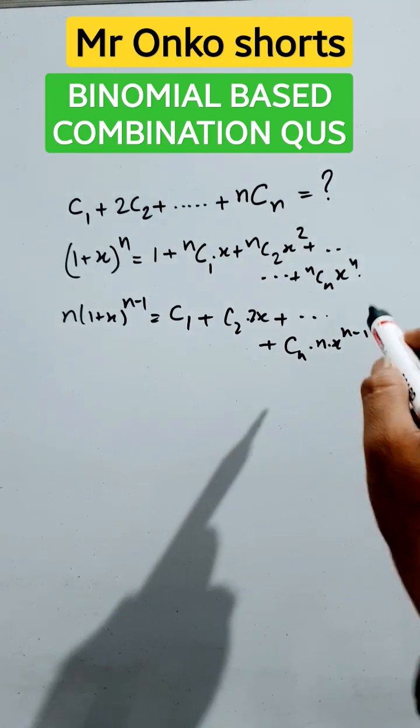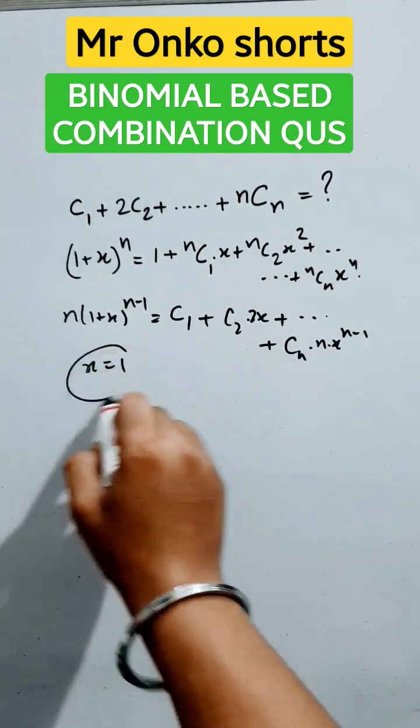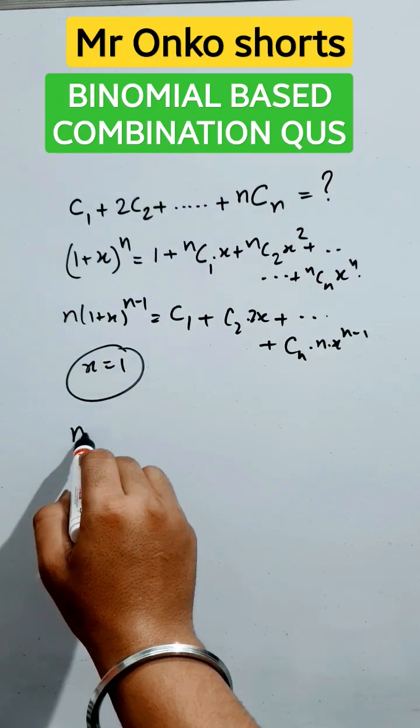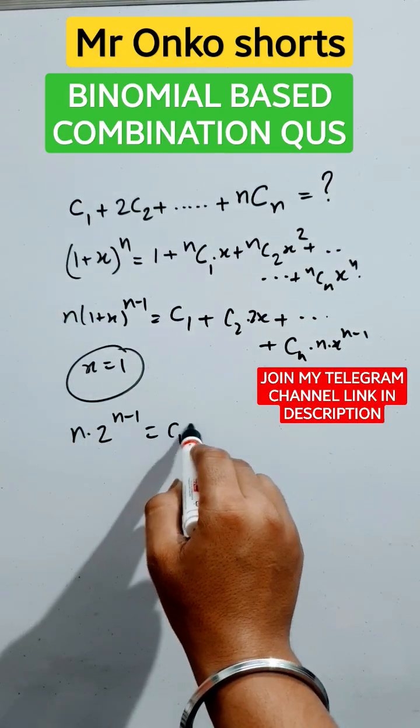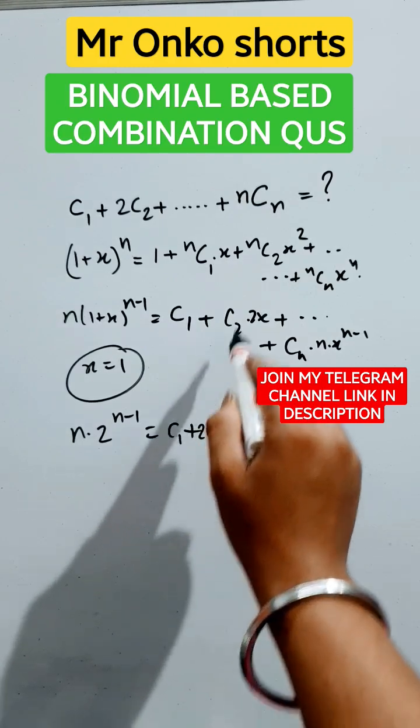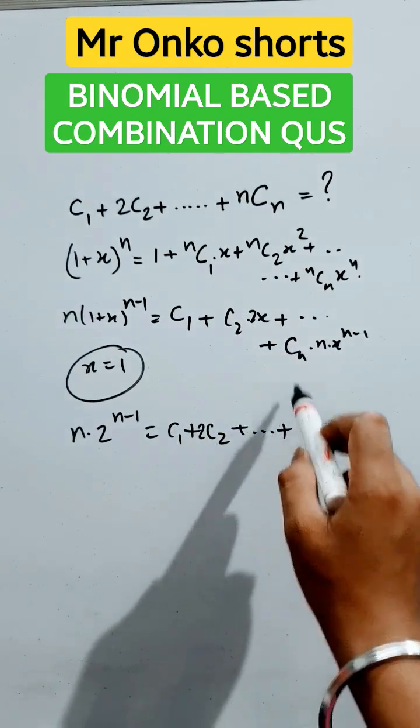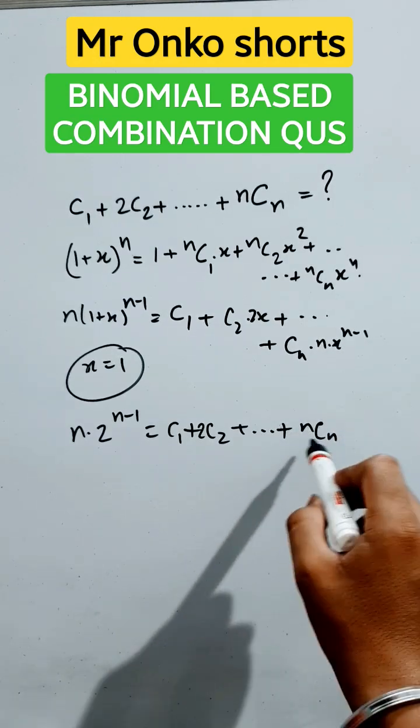Now put x equals to 1 in both sides of the equation. Then it will be n(1+1), that is 2 raised to the power n-1, equals C₁ + C₂·2 (x is 1) + ... + Cₙ·n (also 1). We have to find the value of these.